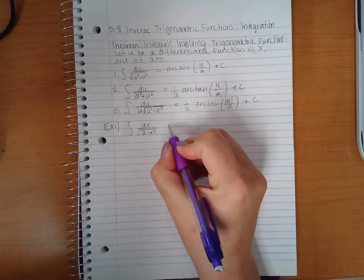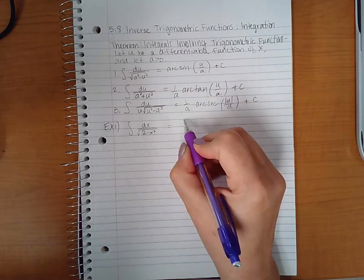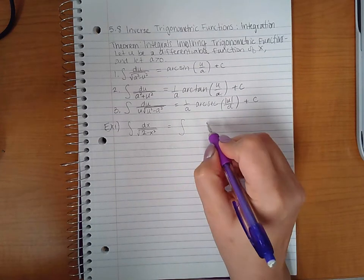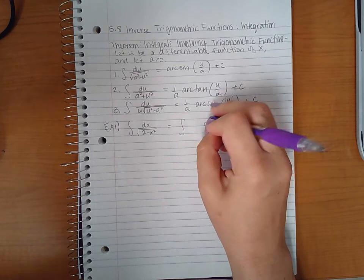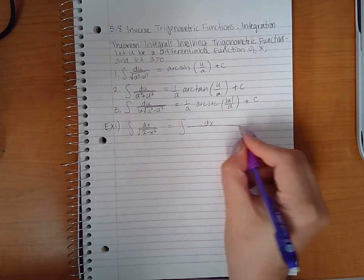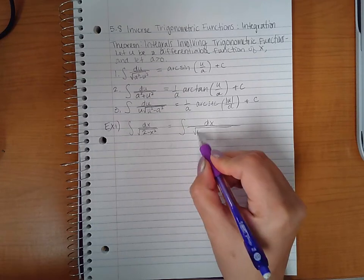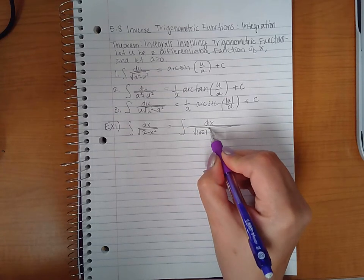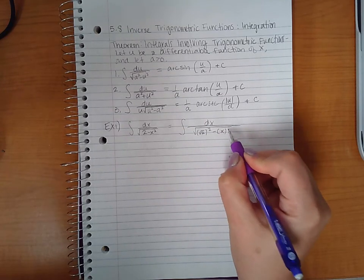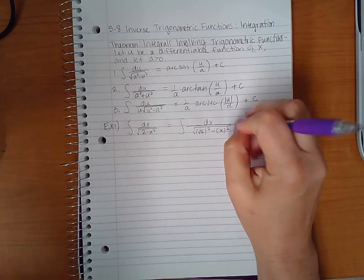In this case you can rewrite it as dx over the square root of the square root of two squared minus x squared, so that it's a little bit more identifiable as to what is a and what is u.